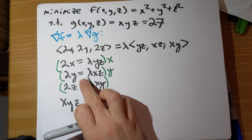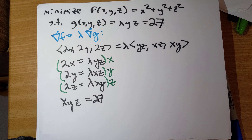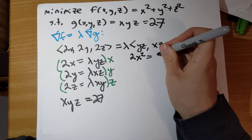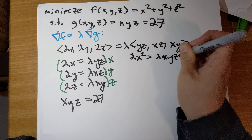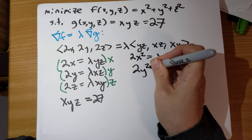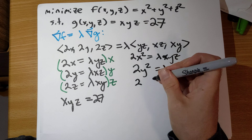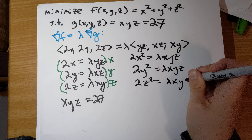Problem number 48. We're asked to find the distance from the origin to the surface xyz equal to 27. This becomes a Lagrange multipliers problem where we need to minimize the function f(x, y, z) = x² + y² + z² subject to the constraint g(x, y, z) = xyz = 27.